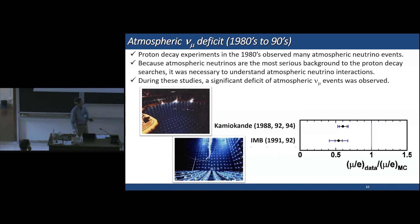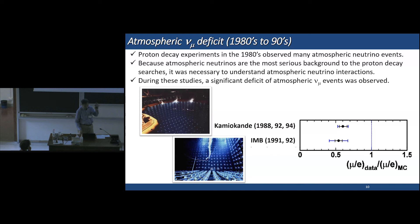Here I summarize their measurement results. The horizontal axis is the mu over e ratio of the data over the same ratio of the Monte Carlo prediction. Both experiments observed a significant deficit of muon-neutrinos. But again, these experiments were unable to understand what was the cause of the muon-neutrino deficit.